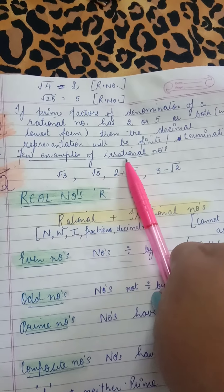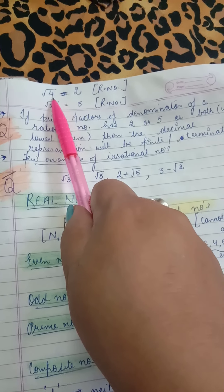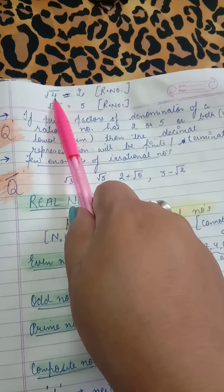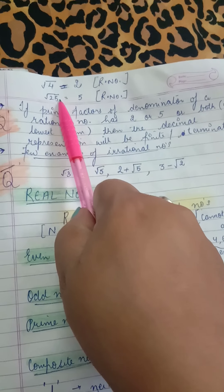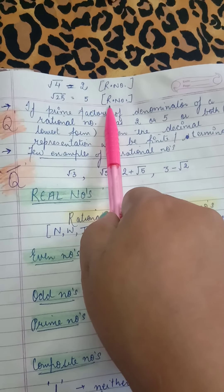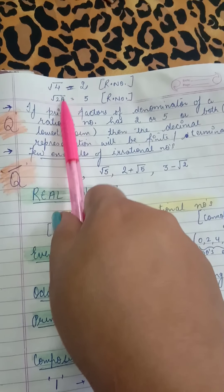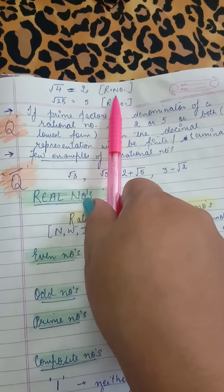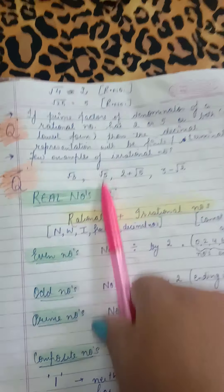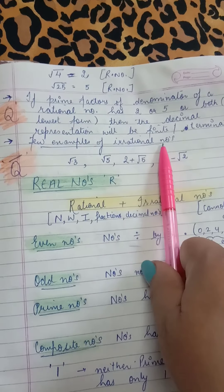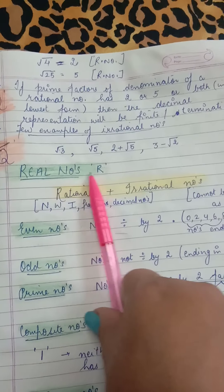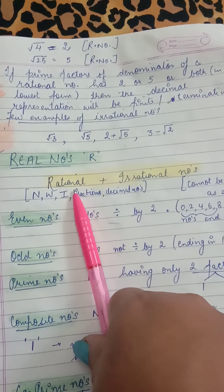Examples of rational and irrational numbers: root 4 equals 2, so it is a rational number. Root 25 equals 5, so it is also a rational number. When you can find an exact value of a root, it is rational. Root 3 equals 1.732 and so on — it is irrational. Root 5, 2 plus root 5, and 3 minus root 2 are all examples of irrational numbers.